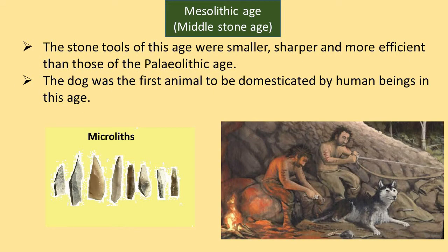Now, come to the Mesolithic Age. Gradually, the climate changed and humans became collectors. They started collecting naturally grown grasses and used them in their diet. Similarly, their tools were also improved. The stone tools of this age were smaller, sharper and more efficient than those of the Paleolithic Age. These were tiny and were called microliths — meaning they were sharp and easier to handle because they were small.